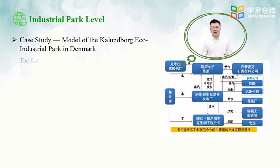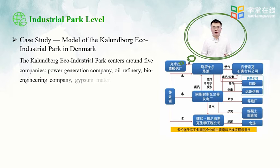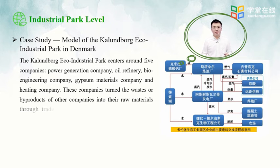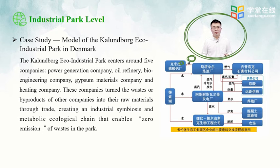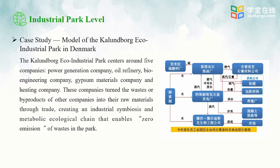One case for a circular economy industrial park is Kalundborg Eco-Industrial Park in Denmark. The Kalundborg Eco-Industrial Park centers on a power generation company, oil refinery, bioengineering company, gypsum materials company, and heating company. These companies turn wastes or byproducts into raw materials through trade, creating an industrial symbiosis and metabolic ecological chain that enables zero emission of wastes in the park. This industrial park was frequently used as an example when promoting circular economy in China.